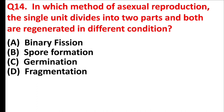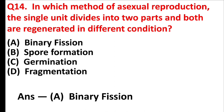In which method of asexual reproduction does a single unit divide into two parts, both regenerated as different individuals? Answer is Option A, Binary Fission.